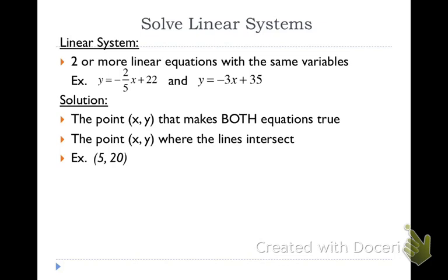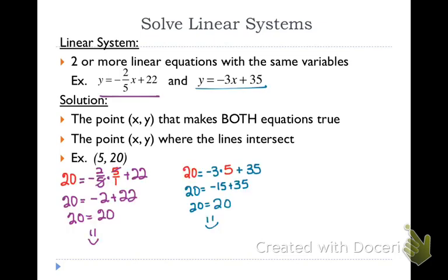I could also graph both of these equations and their lines would intersect, and interestingly enough they intersect right at the point where the x and y value make both equations true. I've already done the work on this and the solution to this system is the point (5, 20). So if I put x equals 5 and y equals 20 into both equations I would get a true statement. I took the 20 and replaced y and the 5 and replaced x in both equations, and I got 20 equals 20. So indeed (5, 20) is the solution to this system of equations.